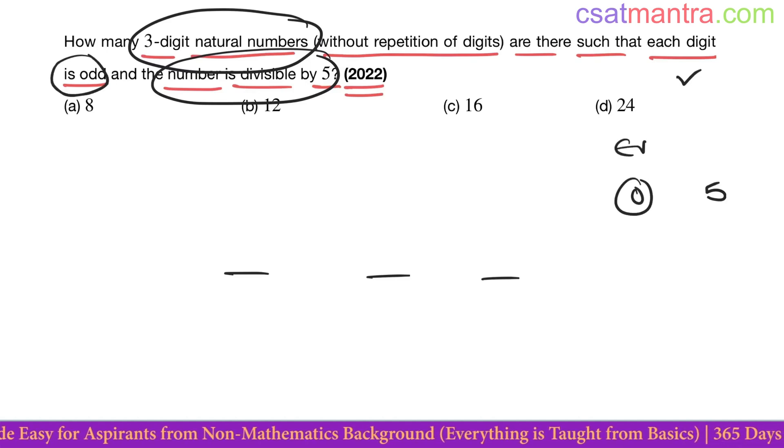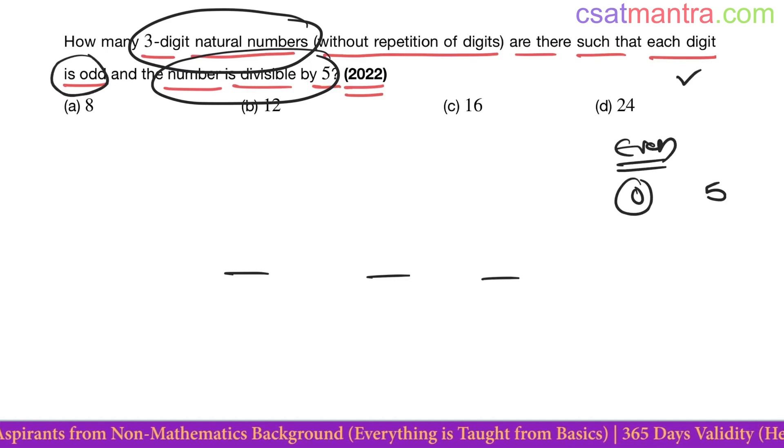0 is even, my friends. When we call a number even, it's when it is divisible by 2. 0 is divisible by 2, that's why we call it even. 0 is 2 into 0. The numbers which are not divisible by 2, we call them odd. 0 is divisible by 2, that's why it is even.